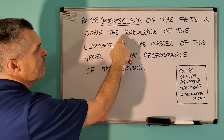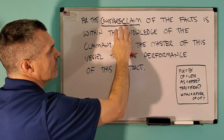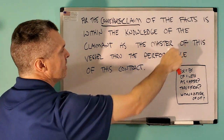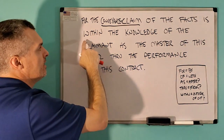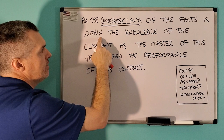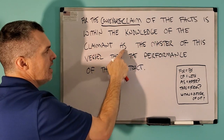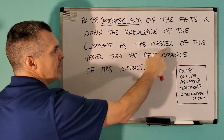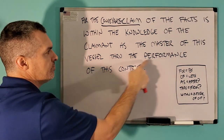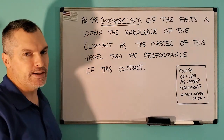So we have: for the conveyance claim of the facts, we have the cause of consequence, then the verb of thinking is, and then we have within the knowledge of the claimant as the master of this vessel through the performance of this contract.